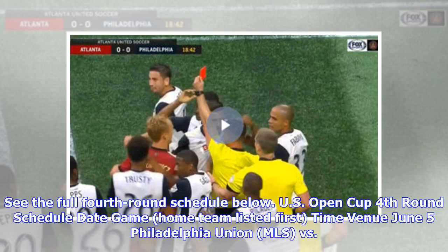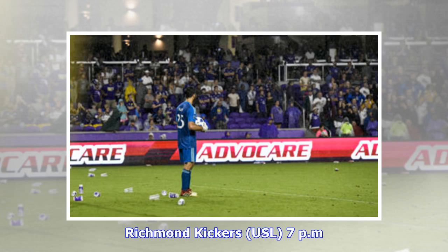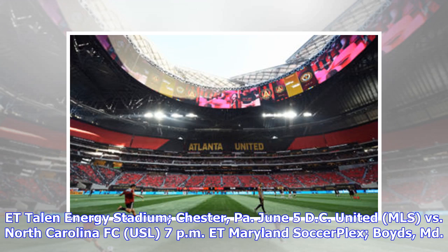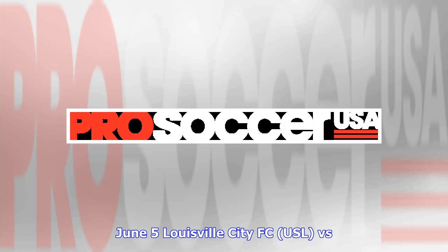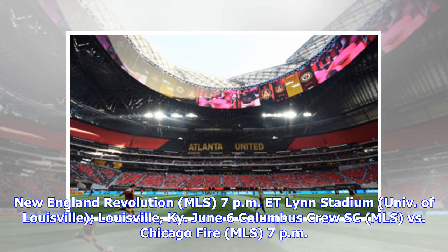U.S. Open Cup fourth round schedule — home team listed first. June 5: Philadelphia Union (MLS) versus Richmond Kickers (USL), 7 p.m. ET, Talen Energy Stadium, Chester, PA. June 5: DC United (MLS) versus North Carolina FC (USL), 7 p.m. ET, Maryland SoccerPlex, Boyds, MD. June 5: Louisville City FC (USL) versus New England Revolution (MLS), 7 p.m. ET, Lynn Stadium, University of Louisville, Louisville, Kentucky.